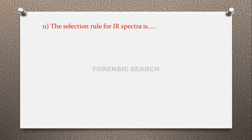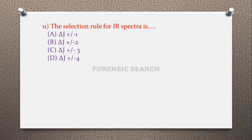Question 11: The selection rule for IR spectra is — option A: ΔJ = ±1, option B: ΔJ = ±2, option C: ΔJ = ±3, option D: ΔJ = ±4. The correct answer is option A — ΔJ = ±1 is the selection rule used in IR spectroscopy, where +1 is for absorption and −1 is for emission.